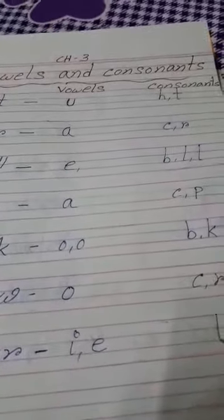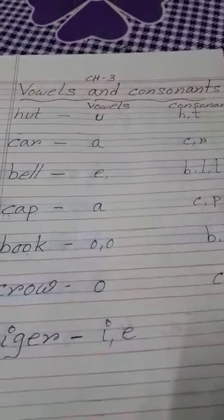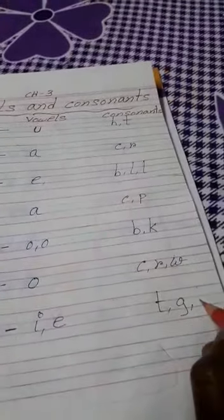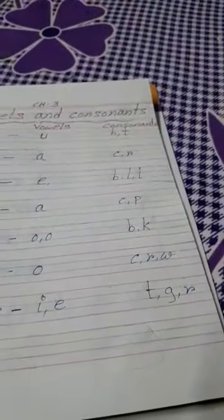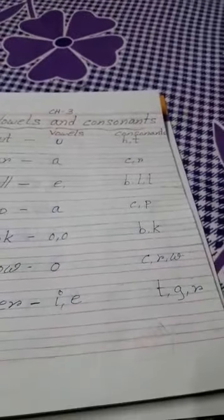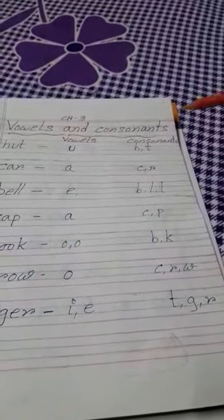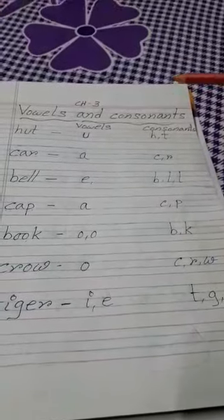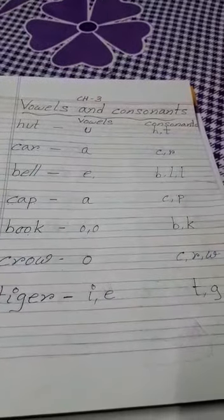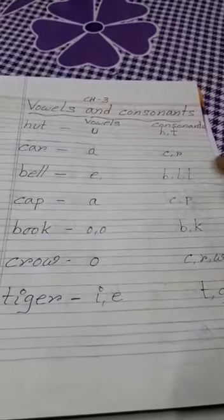And T, G, R are consonants. So I hope you understood what are vowels and what are consonants. Now,